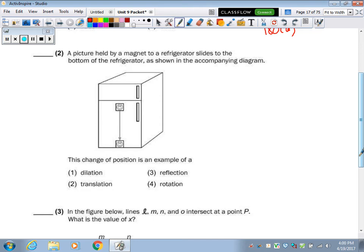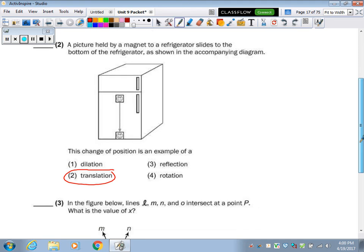A picture is held by a magnet on a refrigerator slides to the bottom of the refrigerator. This change in position is called a translation. Another word for slide is translation.